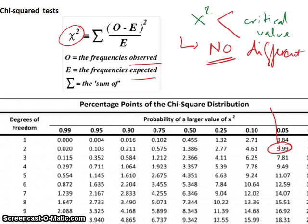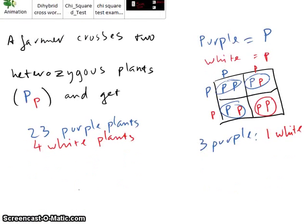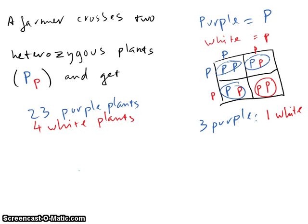So what does it have to do with biology? Let's say you have a problem where a farmer crosses two heterozygous plants, which means big P, little P.